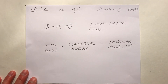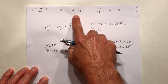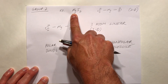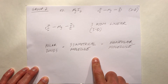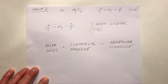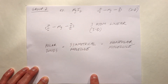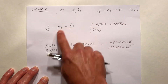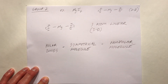For a group 2 element, let's say magnesium bonded to iodines. In two dimensions we'd draw a structure like this, and in three dimensions it's pretty much the same structure — this is called three-atom linear.